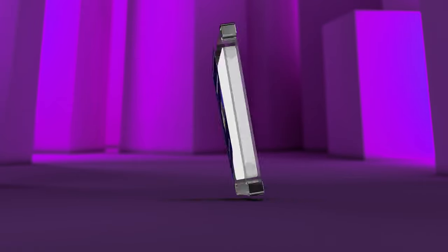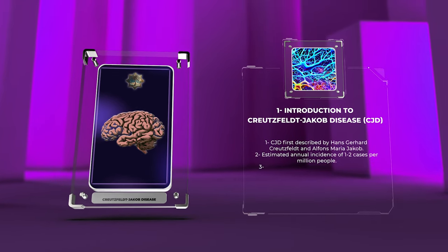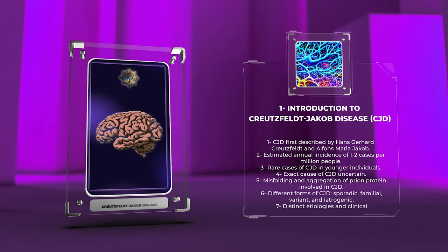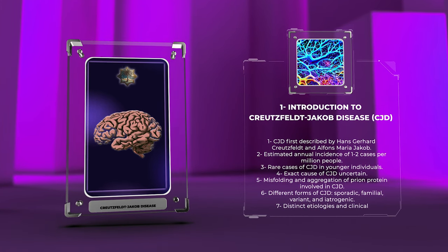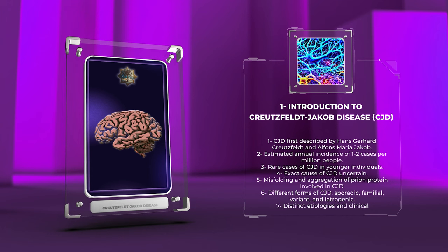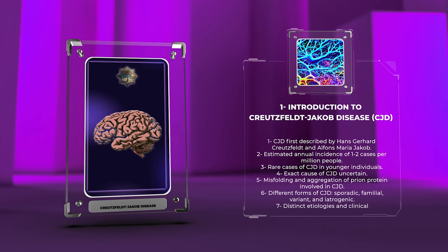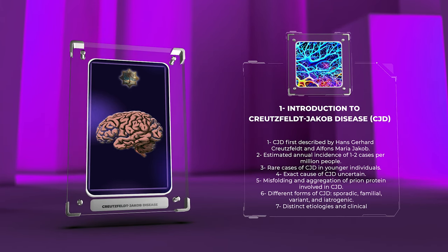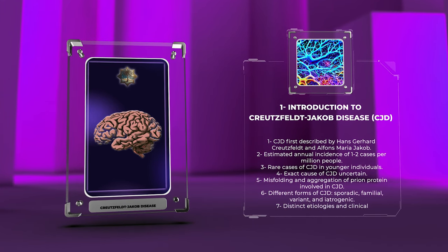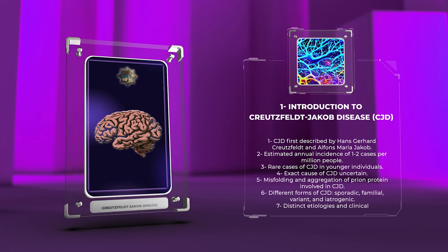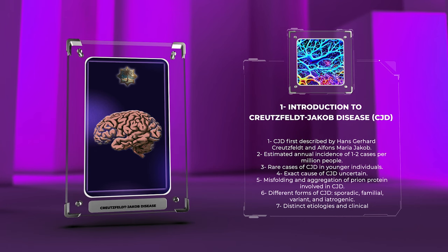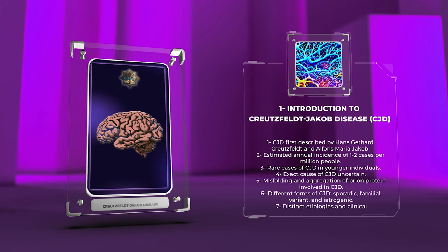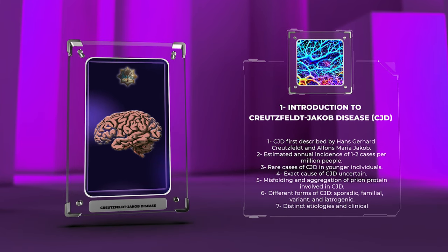CJD was first described by the German neurologists Hans Gerhard Creutzfeldt and Alphonse Maria Jacob in the 1920s and 1930s, respectively. It is known to occur worldwide, with an estimated annual incidence of approximately one to two cases per million people. While it primarily affects individuals later in life, there are rare cases of the disease appearing in younger individuals. The exact cause of CJD remains uncertain, but it is believed to involve the misfolding and aggregation of the prion protein, resulting in the activation of a cascade of pathological events leading to neuronal death.